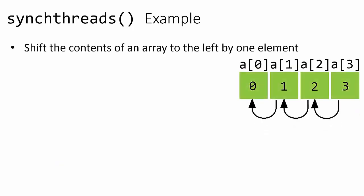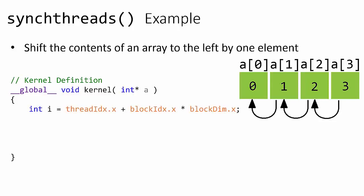Let's assume that we want to shift the contents of an array to the left by one element. For this example, let's assume this array named A is stored in global memory and is of length 4. Now we can implement this process in parallel using a CUDA kernel where a pointer that points to the memory address of the first element of the array in global memory is passed into the kernel as an argument. Now for each thread that implements this kernel, we will first grab the thread's unique index within its block, and we will store that value in a local variable named i, which will actually be stored in a register.